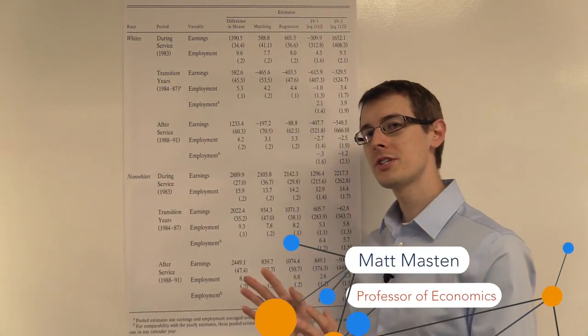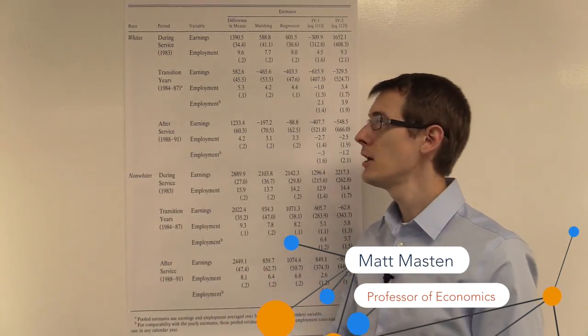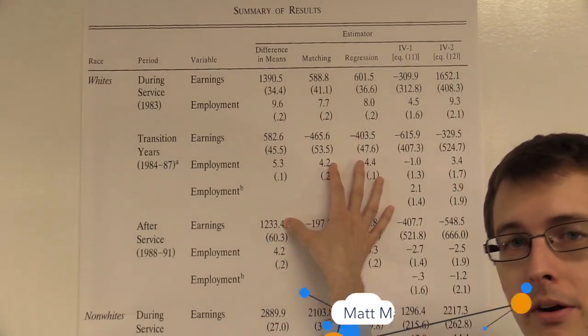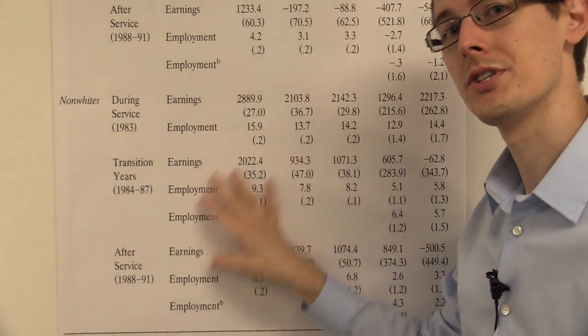Let's look at the results. First, Angrist is going to split his analysis by whites, with the results up here, and non-whites, with the results down here.